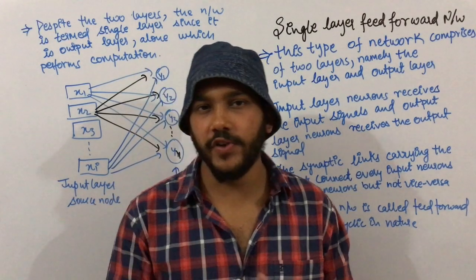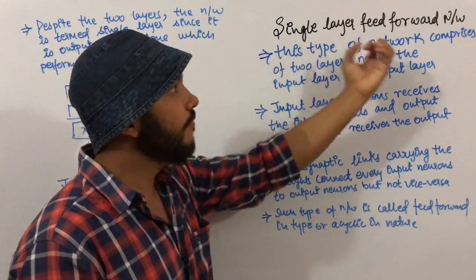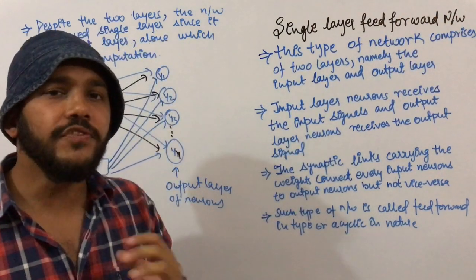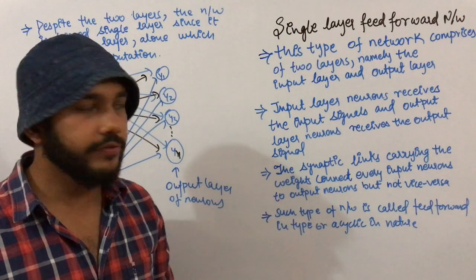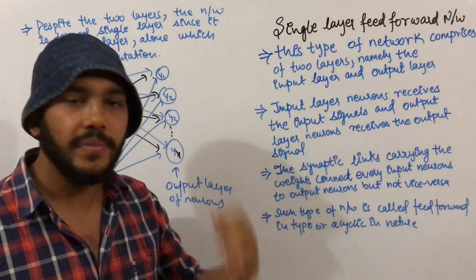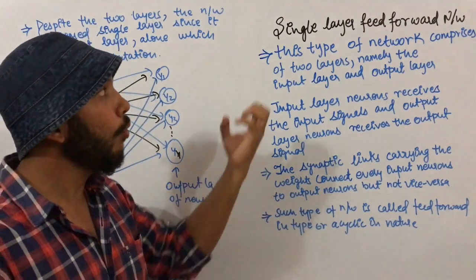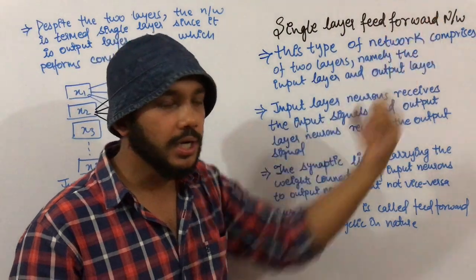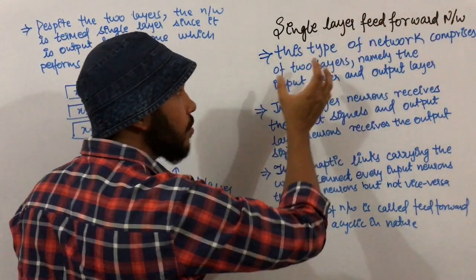In this video, I am going to talk about single layer feed forward network in artificial neural network. There are mainly three classes of network: single layer feed forward network, multi-layer feed forward network, and recurrent network. In this video, we are going to talk about single layer feed forward network.